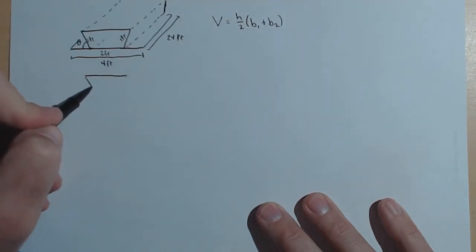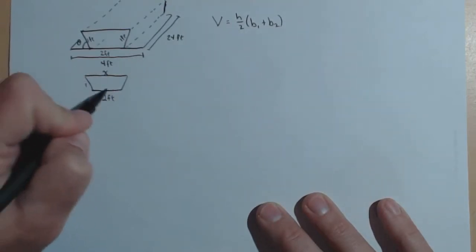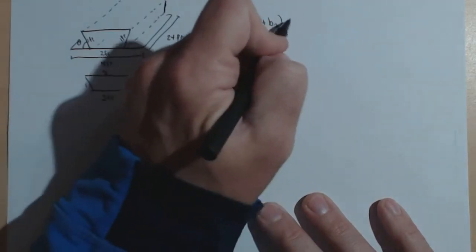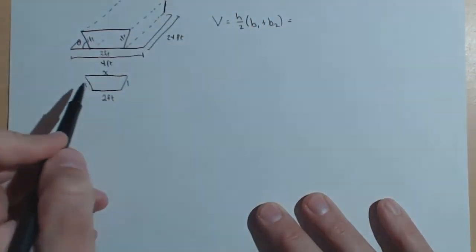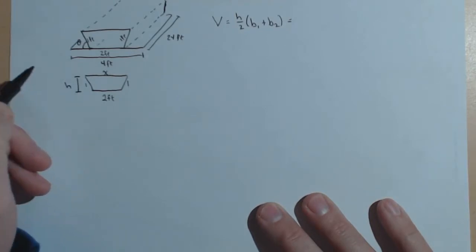So here's our trapezoid and we'll just look at the cross-section. We know this is 2 feet and this side here we don't know, so we might want to give this a name. We might call it x because that's going to vary. This again is 1 foot and this side here is 1 foot. And we need a height of our trapezoid, which we can keep as h for right now.